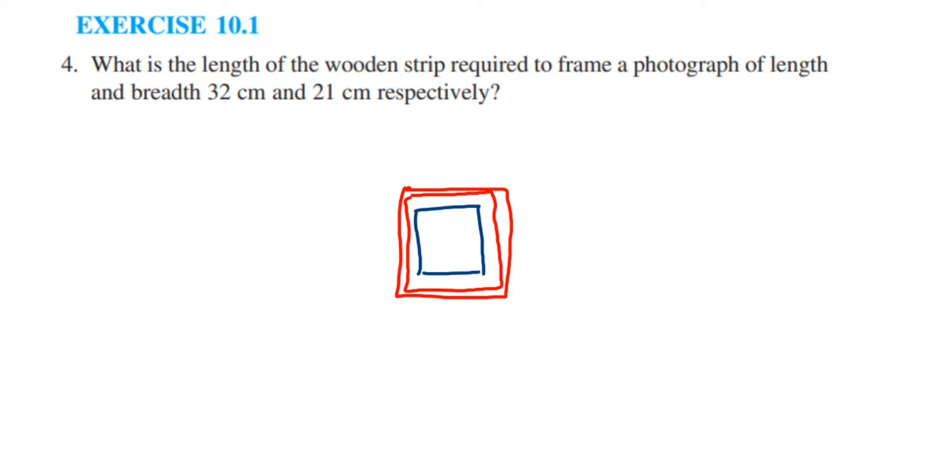Once we get the perimeter of the photograph, that much length of wood is required. So we're going to find out the perimeter. The dimensions - length and breadth - are given in the question. Let's write down what is given: length equals 32 cm and breadth equals 21 cm.